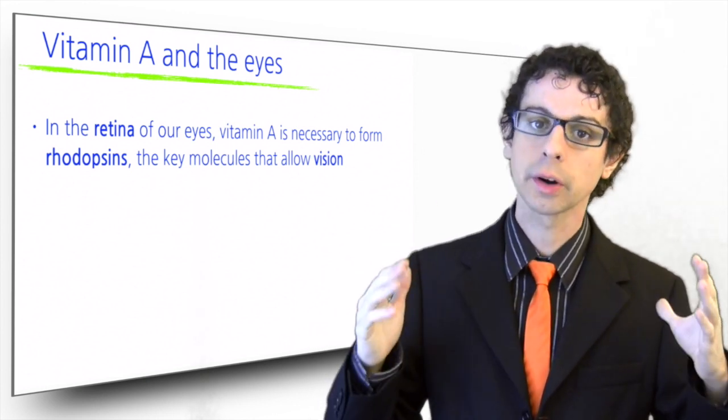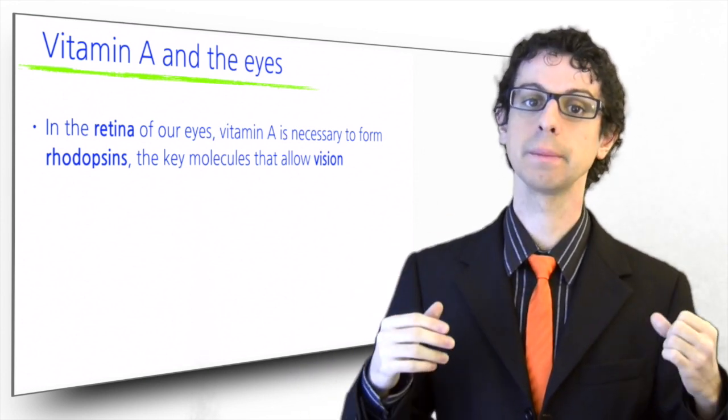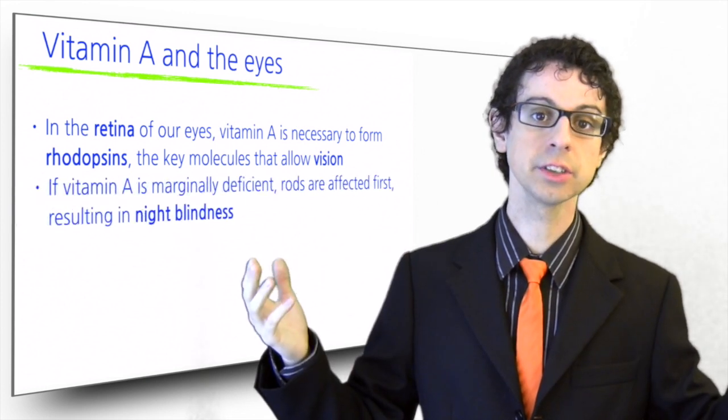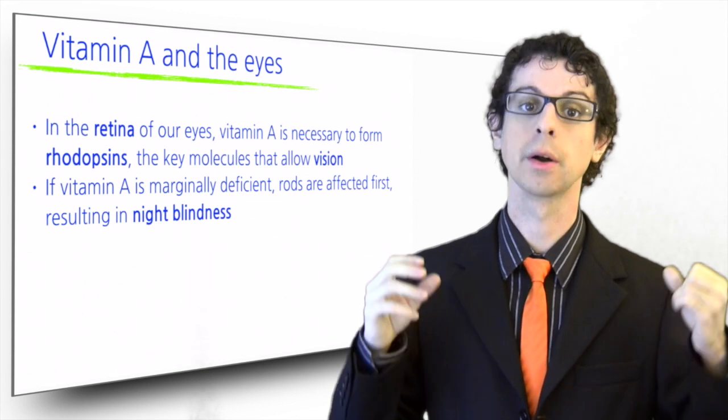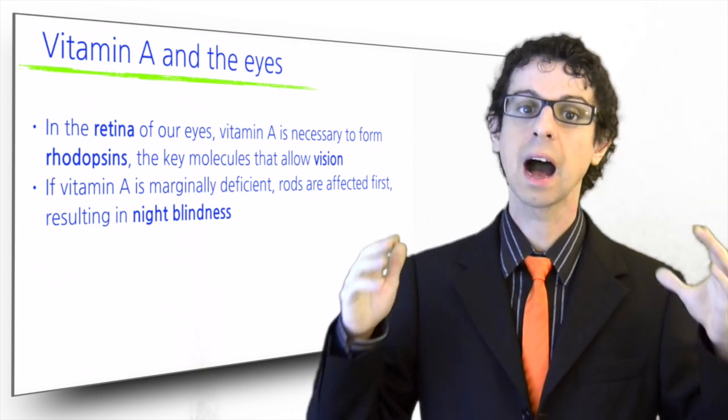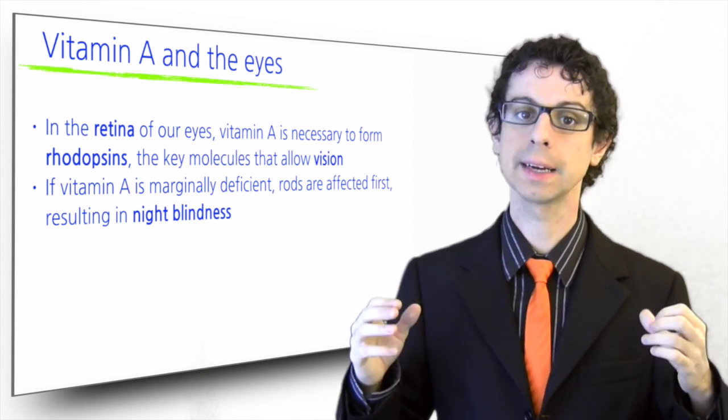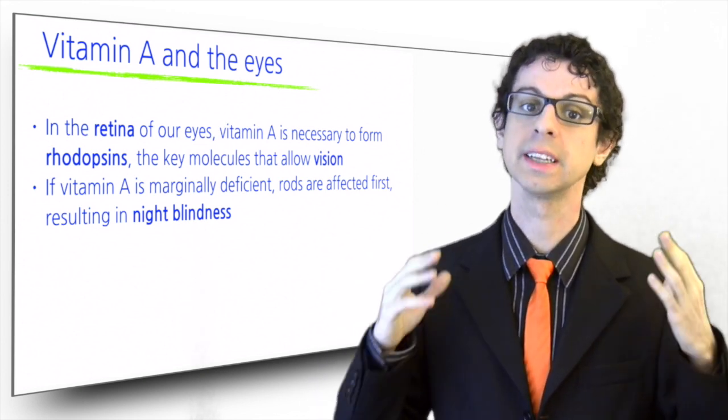But during this work, rhodopsins are degraded and need a constant supply of vitamin A to be regenerated. If vitamin A is deficient, the first cells to be affected are those involved in night vision, our rods. As a result, our eyes will need more time to readjust from bright to dim light, and we will have more difficulties maintaining adequate vision in darkness.